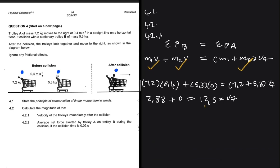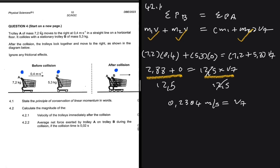It's easy to see now that I just need to divide both sides by 12.5. So if I divide both sides by 12.5, I'm getting 0.2304 meters per second being equals to VF. So there we go. I have the final velocity of the trolleys immediately after the collision.